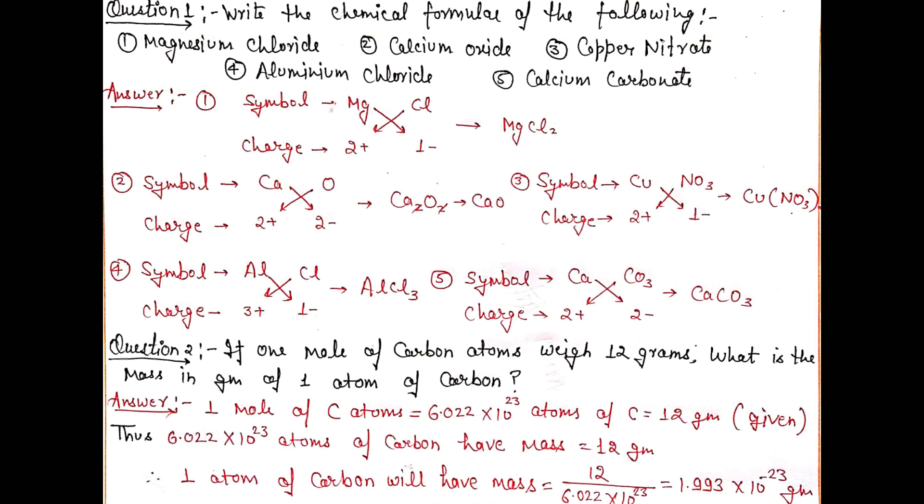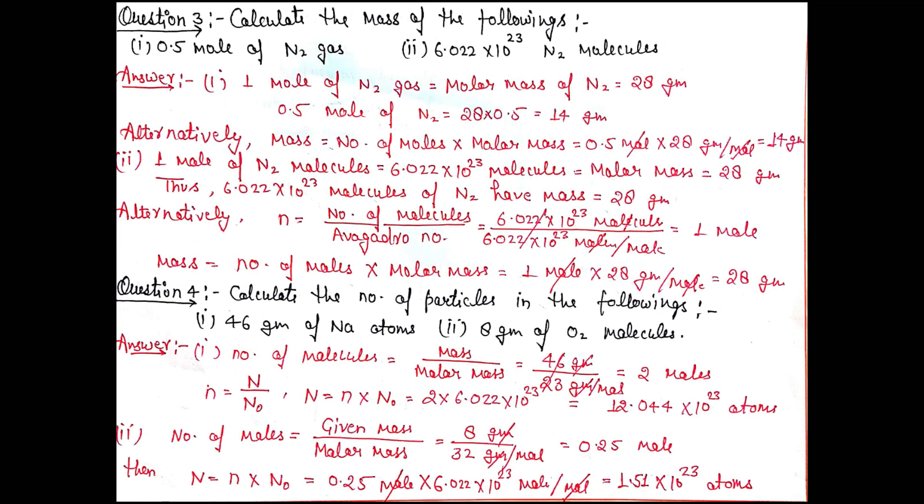Question number 3: Calculate the mass of the following. Part 1: 0.5 mole of nitrogen gas. One mole of nitrogen gas has molecular mass 28 grams. So 0.5 mole of nitrogen equals 28 multiplied by 0.5, which equals 14 grams.